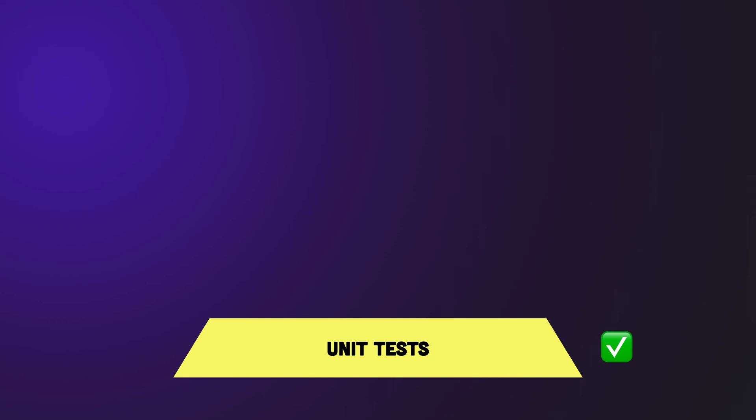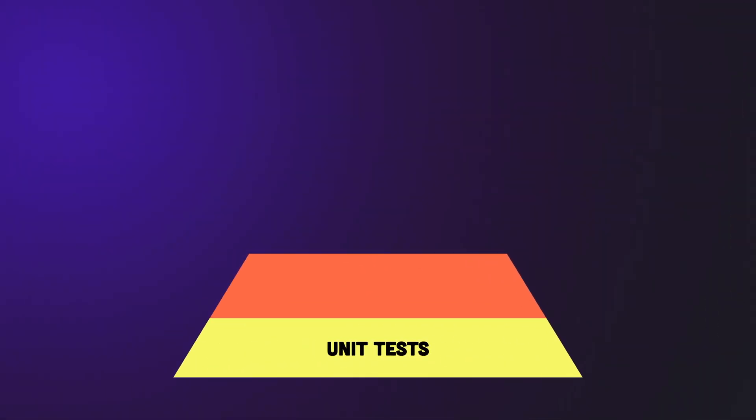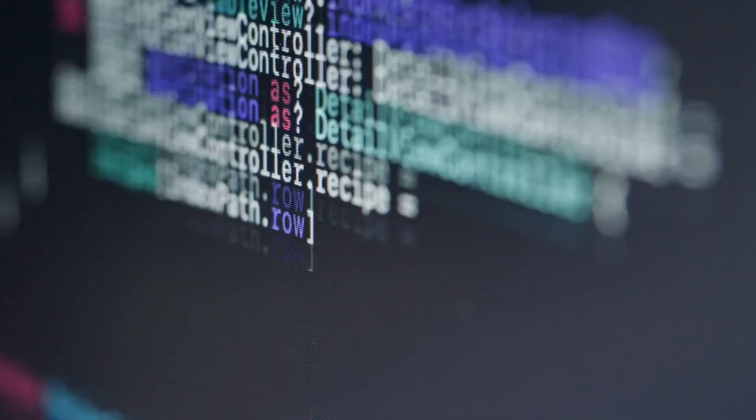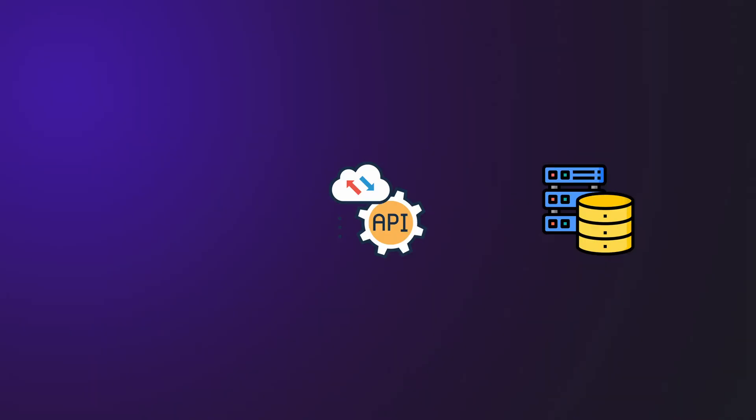You would assume that if everything is working at the lowest level then it's all going to work when you put it together, but that isn't always the case, which is why we need the next level of tests. The next level up in our testing pyramid is what we call the component tests. This is where we test a complete section of your application. For example, if you're writing a web application you might have a front end, an API, and a database. A component test for the API would test the API in isolation from all the other components.